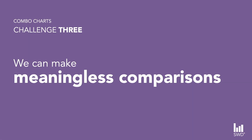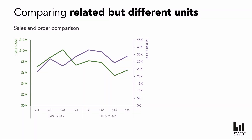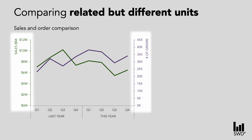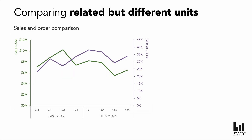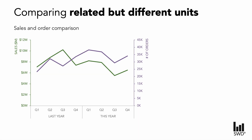Combo charts can also prompt us into thinking that interesting shapes, patterns, or trends that might appear within our data are more important than they actually are. Here we are looking at another classic combo chart which attempts to compare two relatable but different metrics — in this case sales amounts in dollars and the number of orders. Where do your eyes land upon first? I'm willing to guess that a lot of us will see when those lines cross over between Q3 and Q4 of last year as the most attention-grabbing detail. Is this crossover point conveying something important? Potentially yes, but it might just be an oddity of how the scales are currently set up.